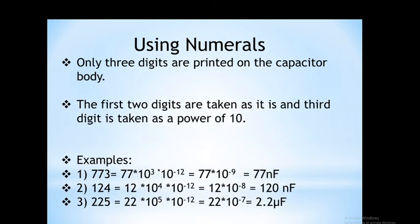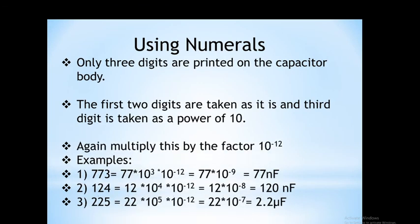First, we see how the value of a capacitor is found out using numerals. Sometimes on the surface of the capacitor, three digits are present. Out of these three digits, the first two indicate the first and second significant digits of the capacitor value, and the third digit is the multiplier. We multiply the whole value by 10 to the power minus 12 to convert it into the standard unit picofarad.